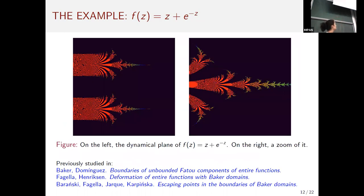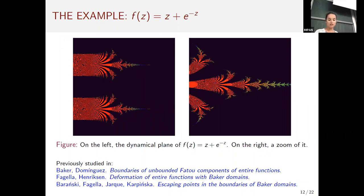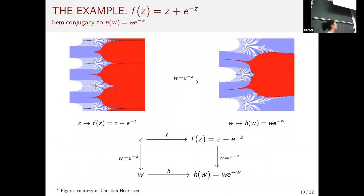Now I change topic to study a concrete example: f(z) = z + e^{-z}. This function has infinitely many Baker domains of w-parabolic type and degree two, so the boundary map is both ergodic and recurrent, meaning almost every point has a dense orbit. We want to describe more explicitly the sets of full measure and zero measure — to find them explicitly.